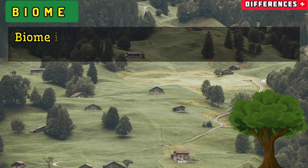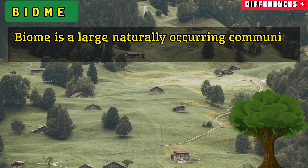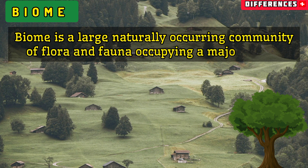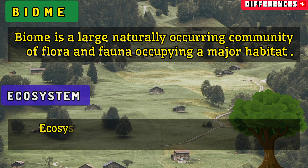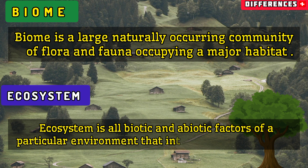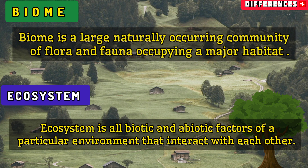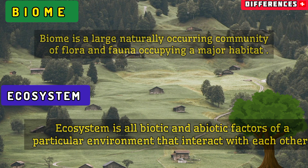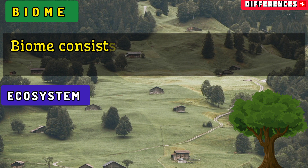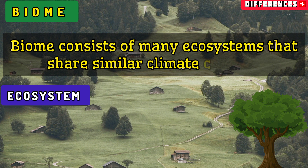Biome is a large, naturally occurring community of flora and fauna occupying a major habitat. Ecosystem is all biotic and abiotic factors of a particular environment that interact with each other. Biome consists of many ecosystems that share similar climate conditions.